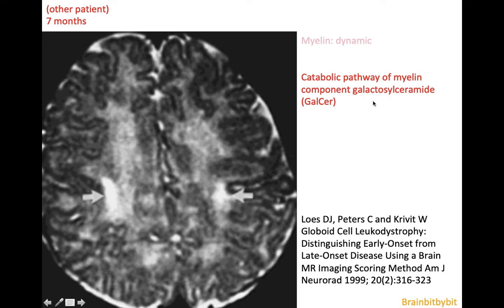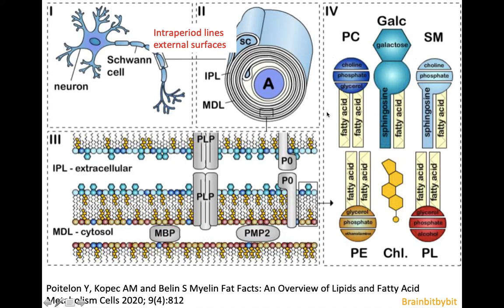The myelin component that is not broken down correctly in Krabbe's disease is galactosyl ceramide, or galser. If you take a closer look at the structure of myelin in this drawing of a Schwann cell, you can see the Schwann cell has formed myelin wrapped around the axon. The space between the myelin sheets is called an intraperiod line, and the myelin sheet consists of myelin basic protein centrally, phospholipids, and many different proteins — one of these proteins is galser.